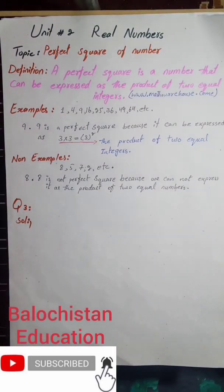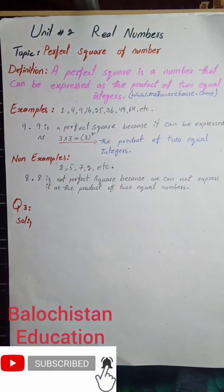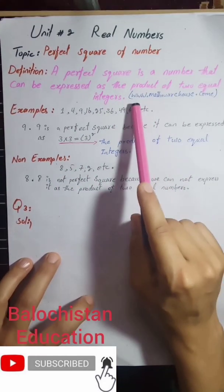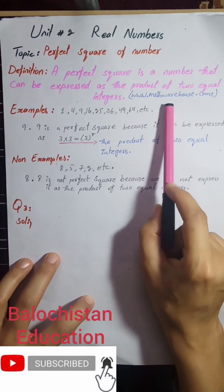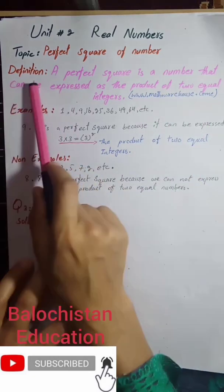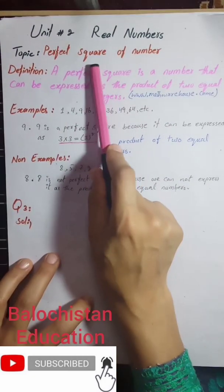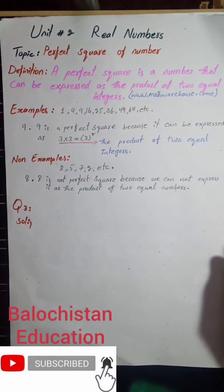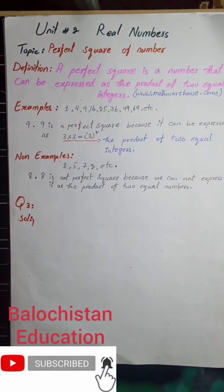We learned in our previous lecture about squares, and now we are going to learn about the perfect square of a number. We have no definition in our book, so I searched for all of you from themathwarehouse.com and found a definition of a perfect square number. I did a little hard work just for you.